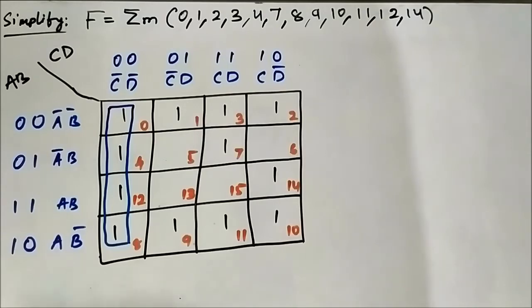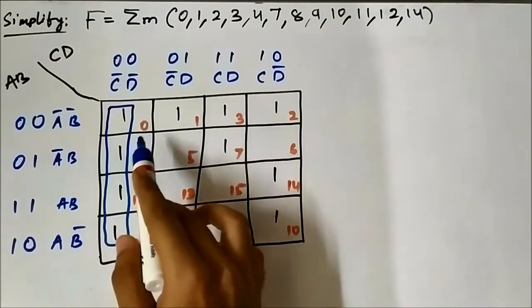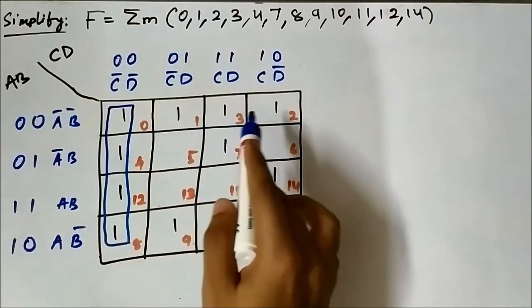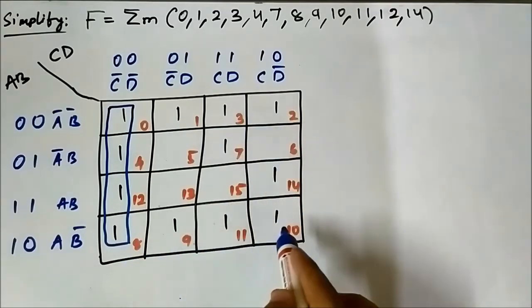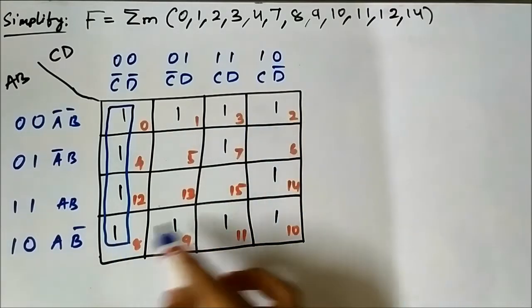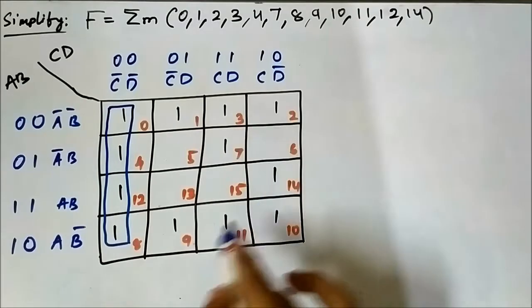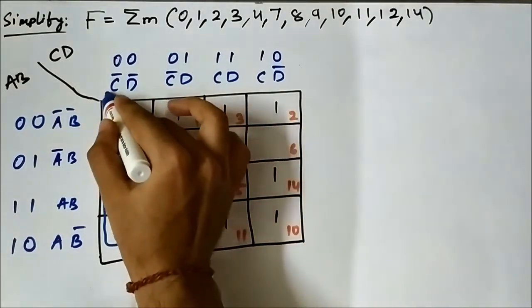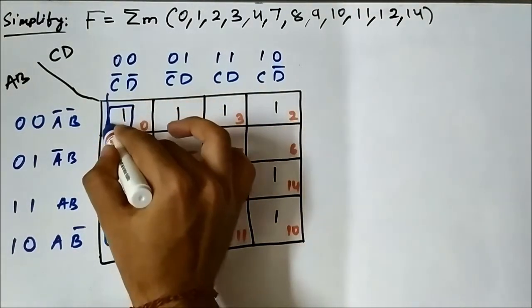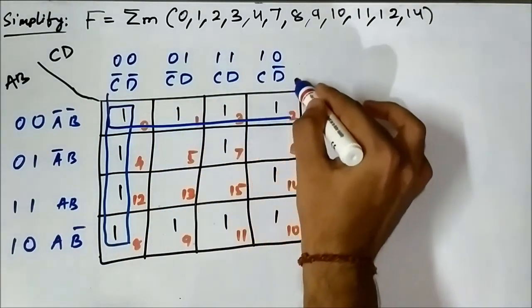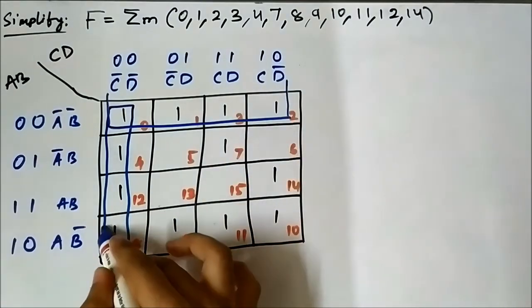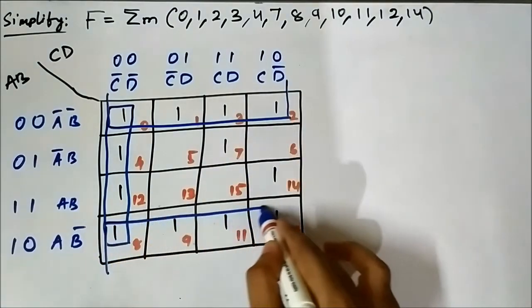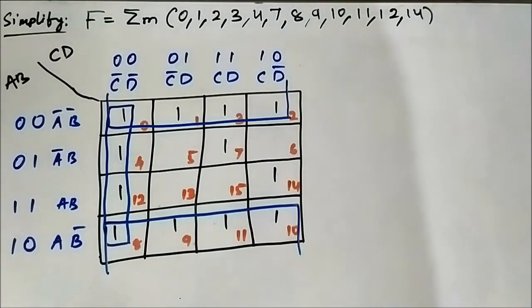Next, pay attention to cells 0, 1, 3, 2, 8, 9, 11, and 10 — these 8 cells. We can group them to form an octate.